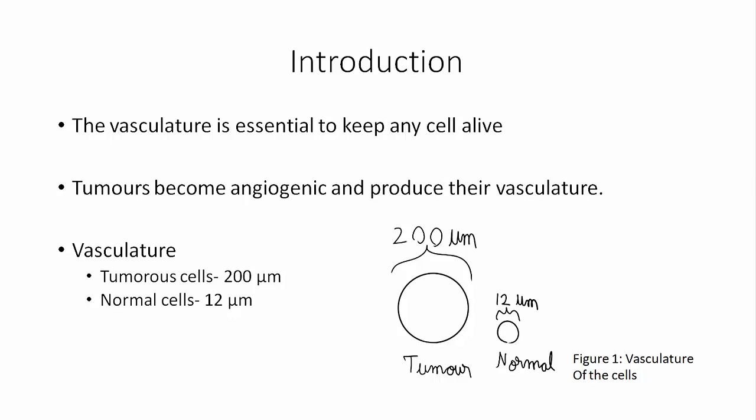Vasculature — that is, blood vessels — is required for any cell. Tumor cells form angiogenic capillaries that supply everything from oxygen to nutrients. The fenestration of tumor capillaries ranges up to 200 nanometers, whereas normal cells generally have only up to 12 nanometers.